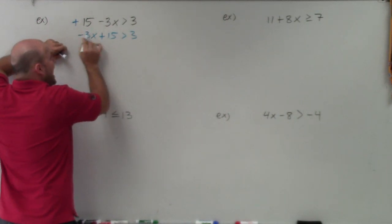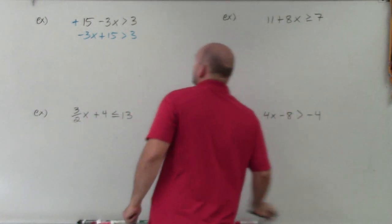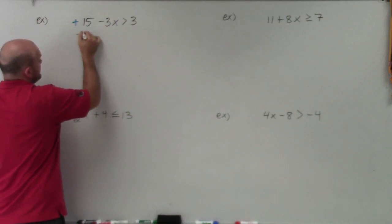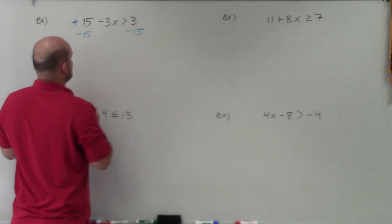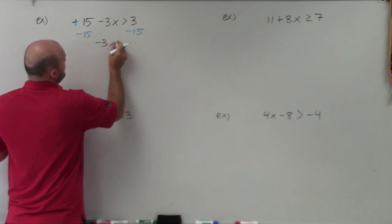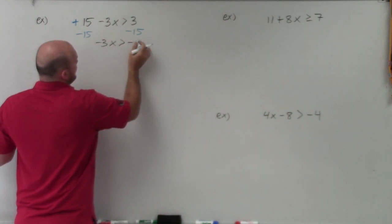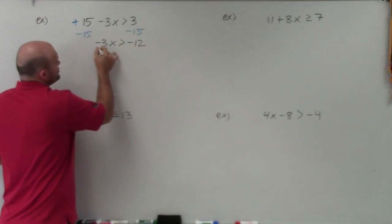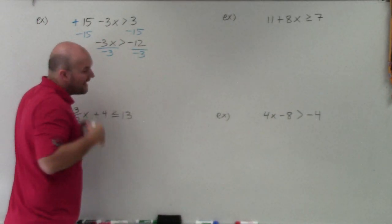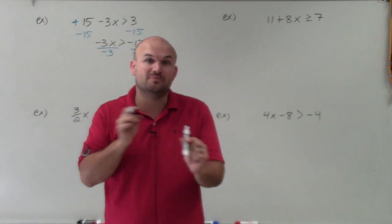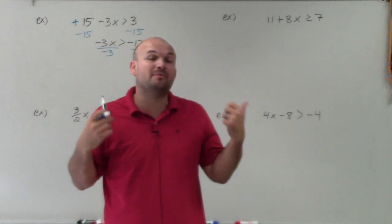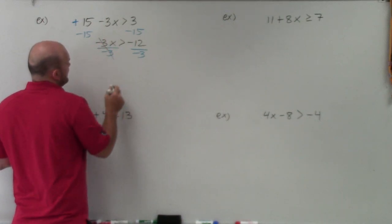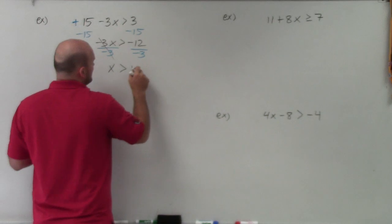So what we're going to do is use our inverse operations. The first thing we do is undo addition and subtraction, so I'm going to subtract the 15 on both sides. When doing that, I get negative 3x is now greater than negative 12. Then I need to undo multiplying by negative 3, so I'm going to divide by negative 3 on both sides. I'm dividing by a negative 3, so I need to flip the sign. That divides to 1, and I'm left with x is now greater than 4.